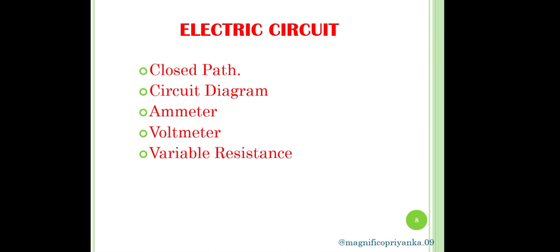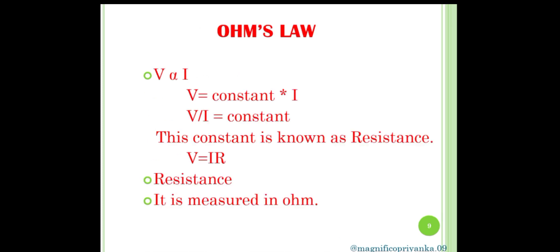About variable resistance: it is a component used to regulate current without changing the voltage, and is called variable resistance. Next is one of the most important laws, that is Ohm's law. It gives a relationship between potential difference and electric current. As per Ohm's law, current flowing through a conductor is directly proportional to potential difference across its ends, provided physical conditions like temperature remain the same.